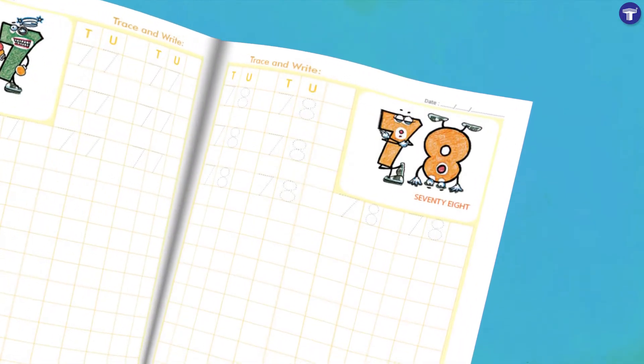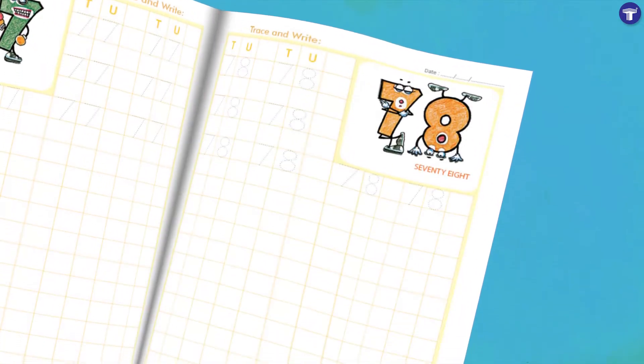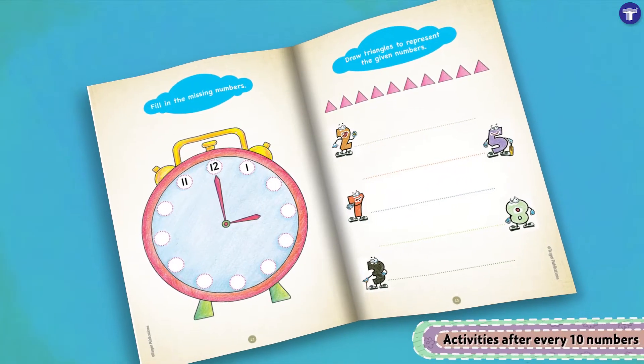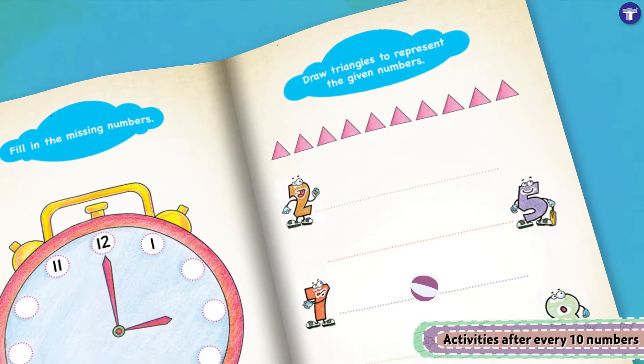Nurture No. 1 to 100 includes multiple boxes for ample writing practice. The book has engaging activities after every 10 numbers for a quick revision.